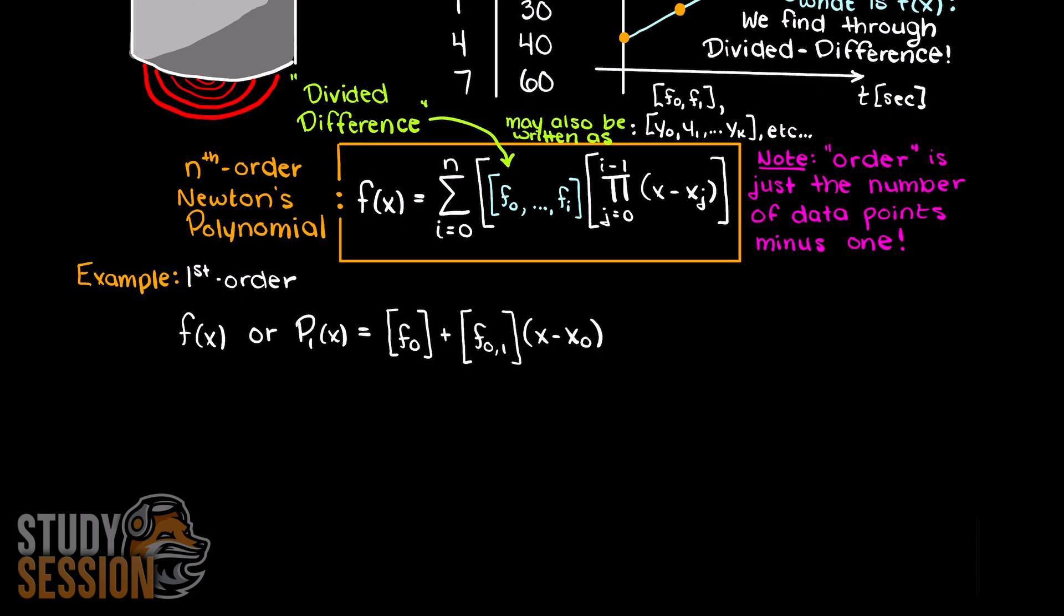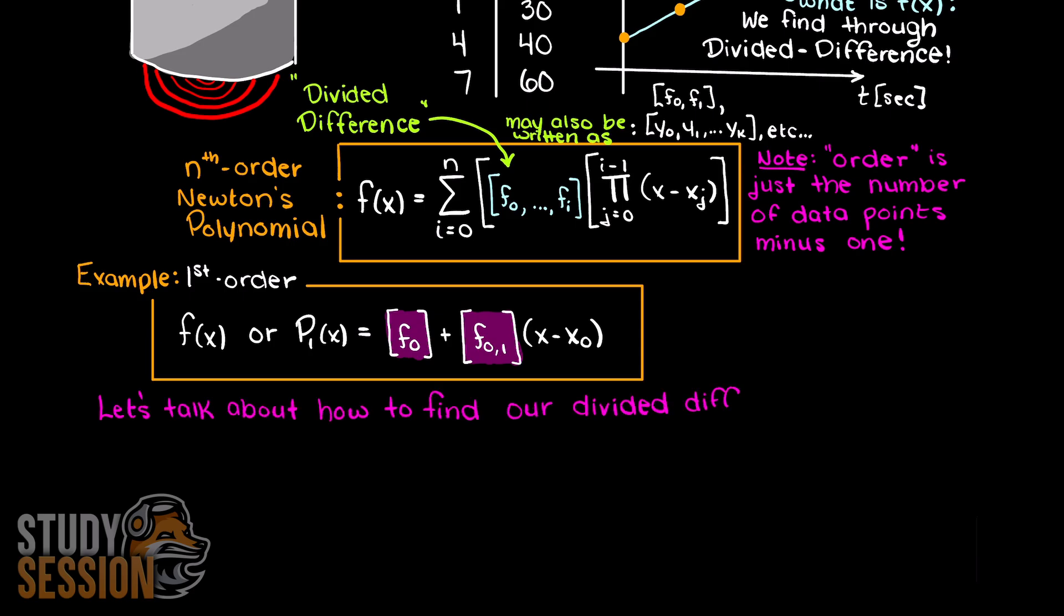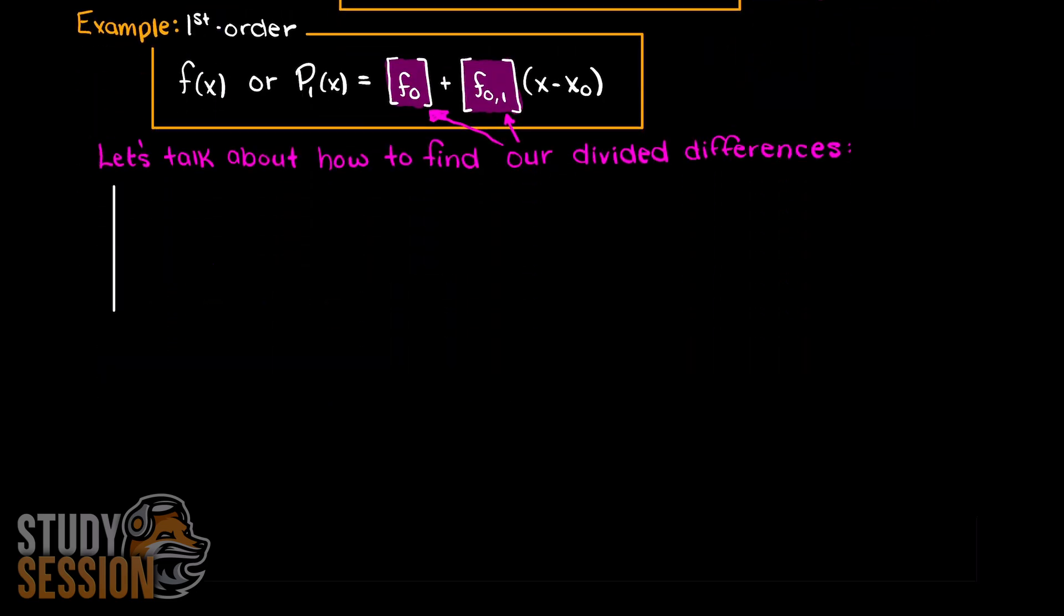Let's begin talking about how we find the Newton polynomial coefficients and what they look like. Well, let's start simple with only two data points, and derive this formula to better understand divided difference interpolation. With two data points, remember that we have an n minus 1 order Newton polynomial, and therefore we need a first order Newton polynomial, which looks like this.